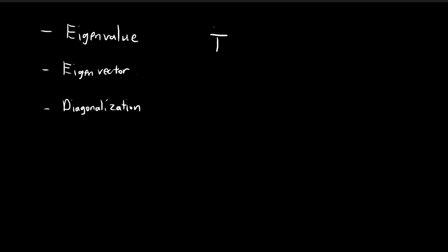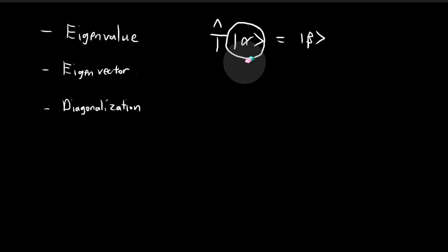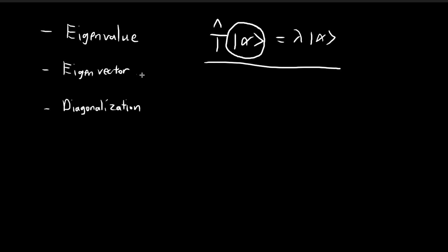Let's say we have a linear transformation called T, and we're going to apply this to a vector called alpha. This process outputs some other vector — let's call it beta. We're going to investigate a very special class of vectors where, after you apply the linear transformation, the resulting vector is equal to the vector itself multiplied by a scalar. Any vector that behaves in such a way is called an eigenvector, and the corresponding scalar is called an eigenvalue.